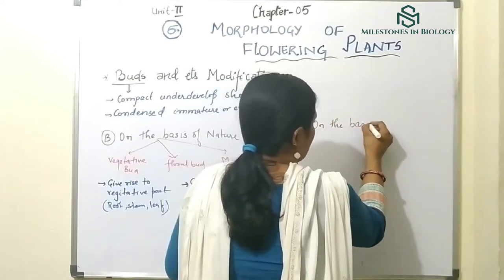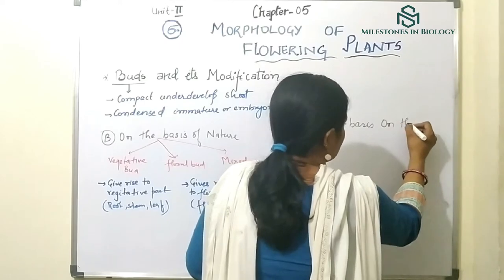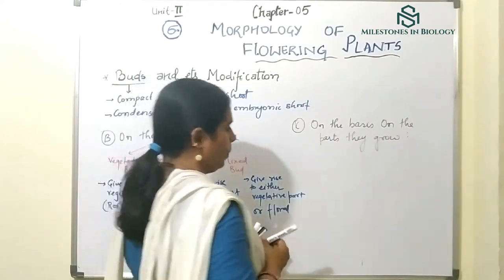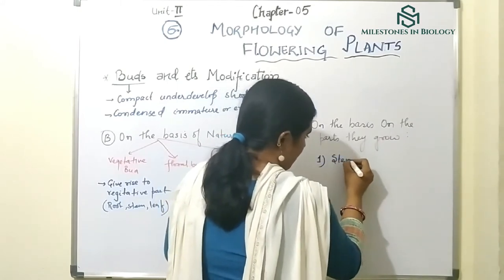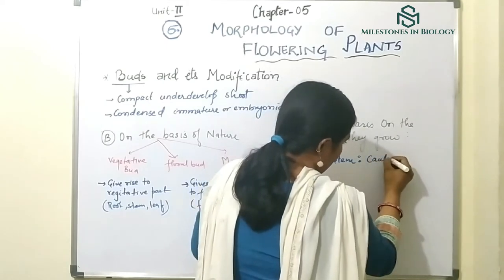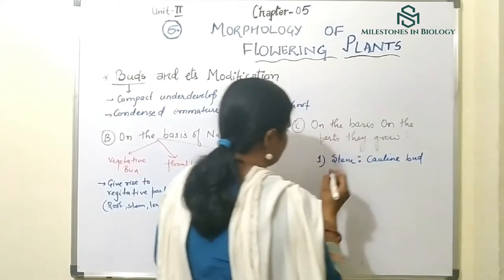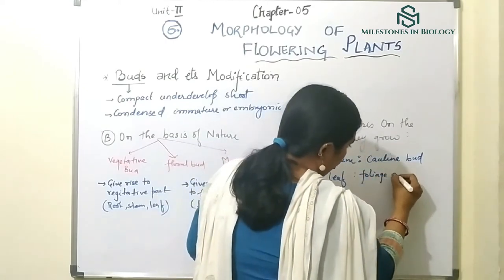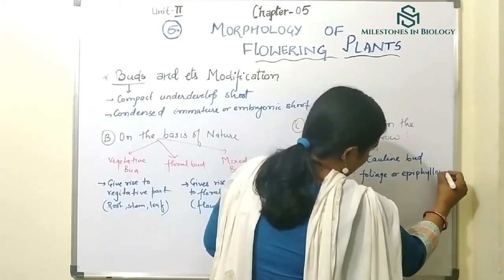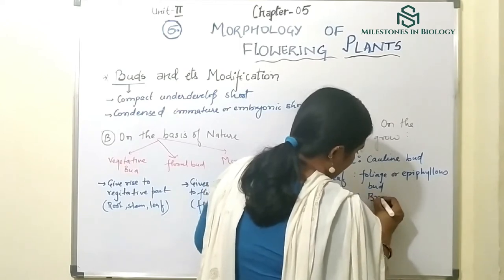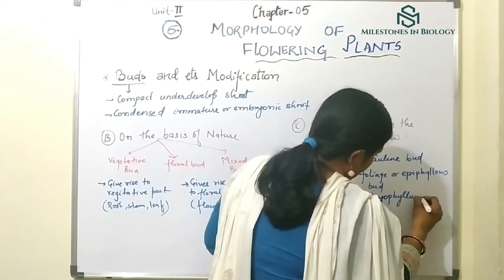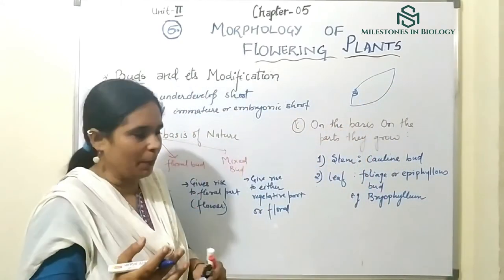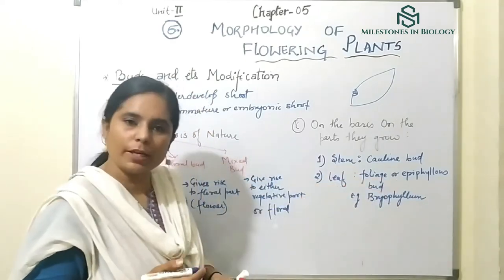The next category is on the basis of the parts they grow on. If the bud grows on the stem, it is called a cauline bud. If they grow on a leaf, they are called foliage or epiphyllous buds. An example is Bryophyllum, where buds grow on the leaf and later develop into a complete plant.